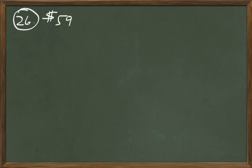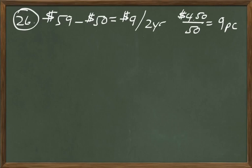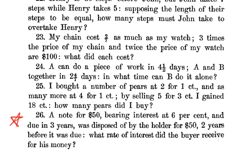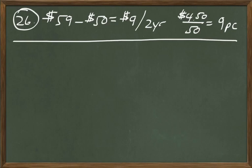The new buyer paid $50 and gets $59 after waiting only two years, not three. He's going to get a higher interest rate than the first buyer because he's holding it for less time for the same payoff. That's $9 gain on $50, and since he only has to wait two years, that's $4.50 per year — an interest rate of 9%. So the answer to number 26 is 9%, and the second buyer is making out better than the first.